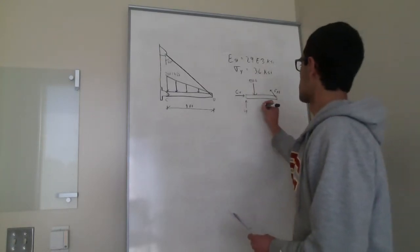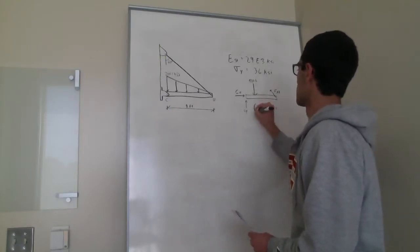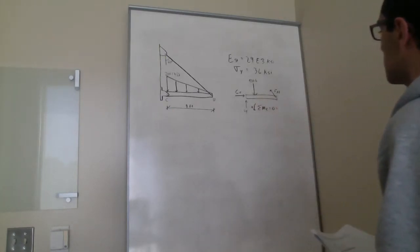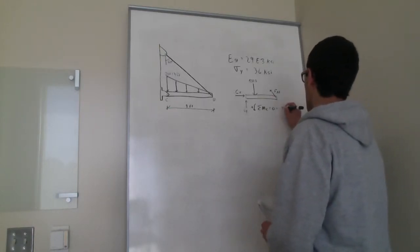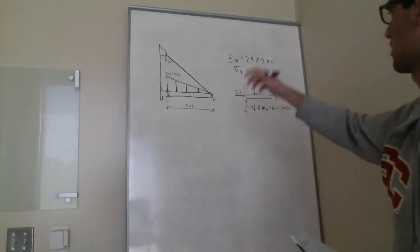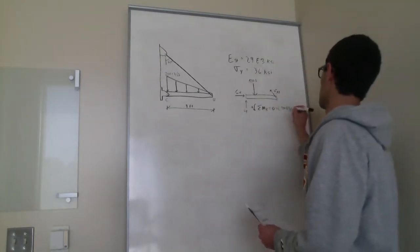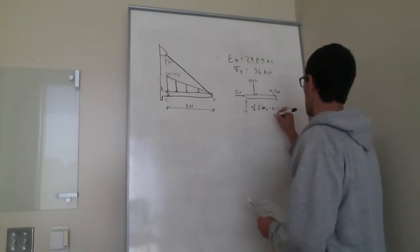We can do the sum of the moments about C equals 0. And that will be 900 times 3 clockwise, plus that's going to be FAB sine theta.